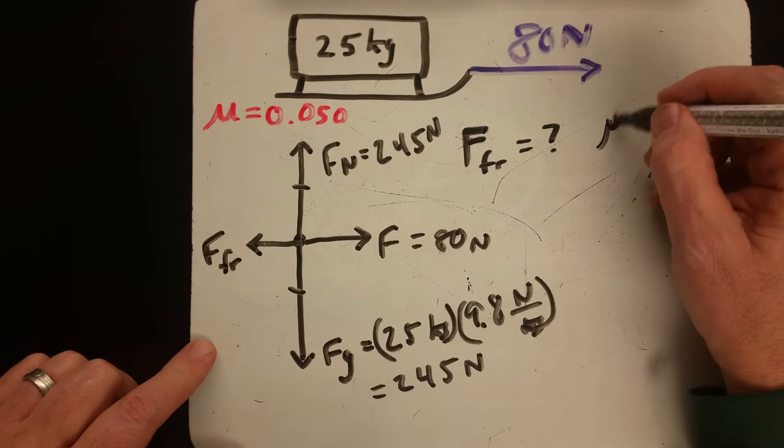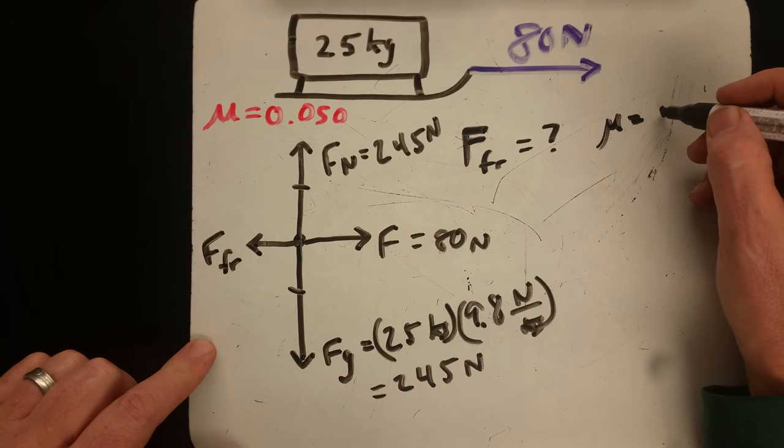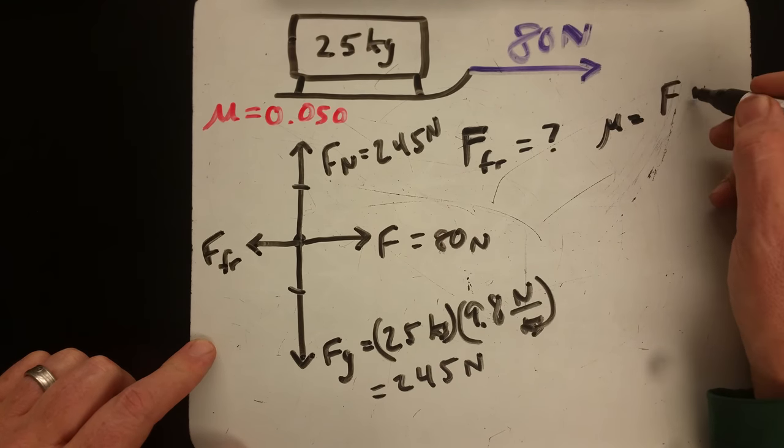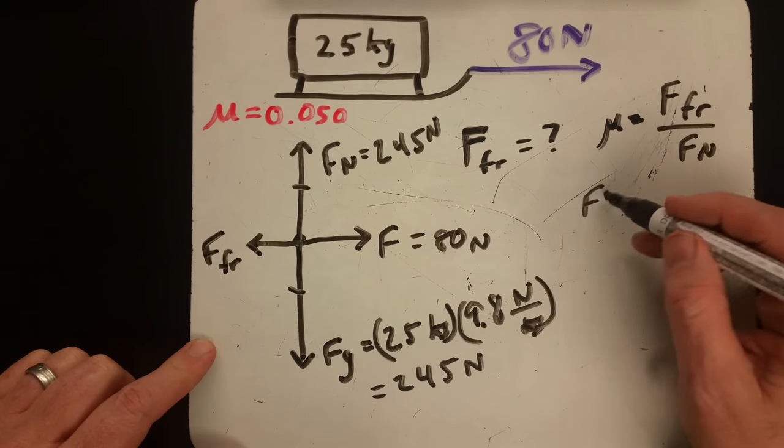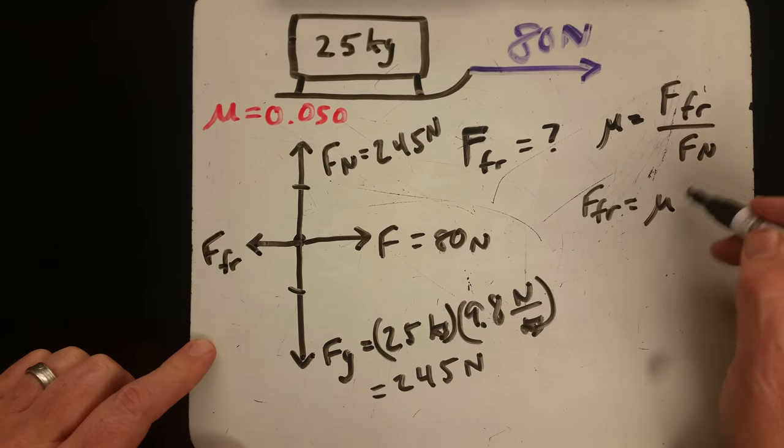From our mu equals force of friction over force normal, we can rewrite that as force of friction is mu times F normal.